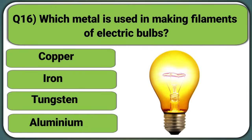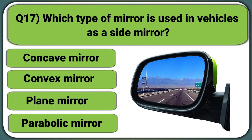Which metal is used in making filaments of electric bulbs? Copper, Iron, Tungsten, or Aluminium. Answer: Tungsten.